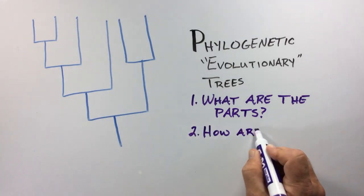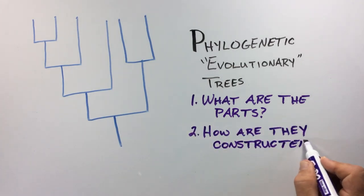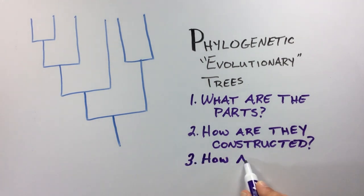What are the parts? How are they constructed? And finally, how are they interpreted?